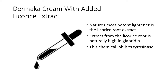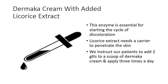Dermica cream with added licorice extract — nature's most potent lightener is the licorice root extract. Extract from the licorice root is naturally high in glabridin. This chemical inhibits tyrosinase, the enzyme essential for starting the cycle of discoloration. Licorice extract needs a carrier to penetrate the skin. We use Dermica cream because it already has licorice root extract in it, but we add more for staining. We instruct our patients to add two to three drops to a scoop of Dermica cream and apply it three times a day.